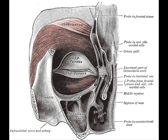These folds become permanent in senescence, and form the so-called crow's feet. The levator palpebrae superioris is the direct antagonist of this muscle. It raises the upper eyelid and exposes the front of the bulb of the eye.